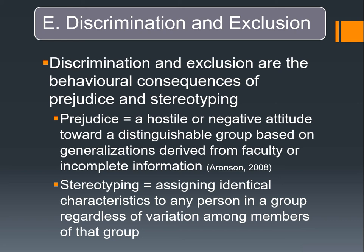Prejudice and stereotyping are similar but distinct: prejudice involves a negative attitude, whereas stereotyping means we may not intend negative consequences — even the most open person stereotypes, assigning identical characteristics to all people in a group. For example, I'm not prejudiced towards young adults, but I might stereotype — I've heard the stereotype that millennials are self-centered, though I personally don't think that at all. On an exam, make sure you understand the difference between prejudice and stereotyping.